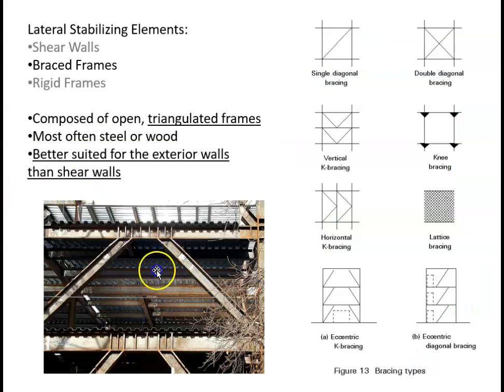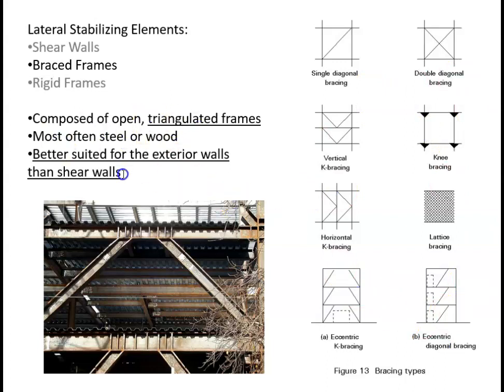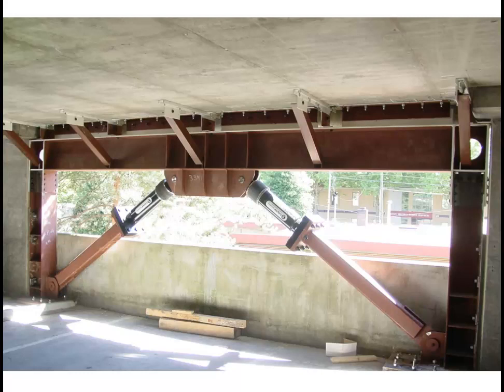Braced frames: these are our triangular bracing, which comes in many different forms. Composed of open triangulated frames in steel and wood, they are better suited for exterior walls than shear walls because they allow for more window openings. Here is what appears to be a parking garage having a pretty serious retrofit.